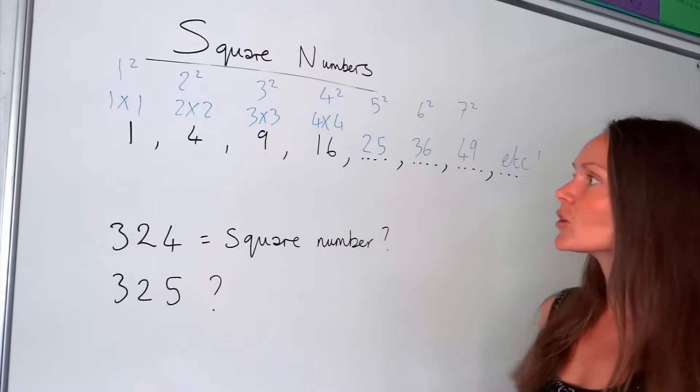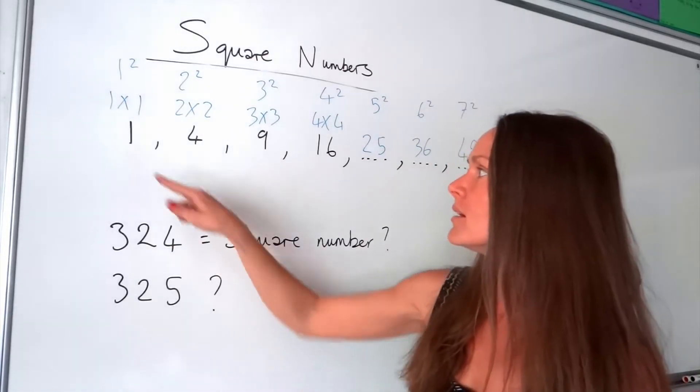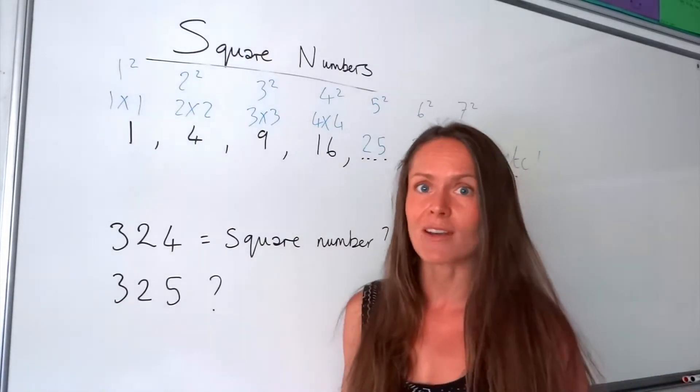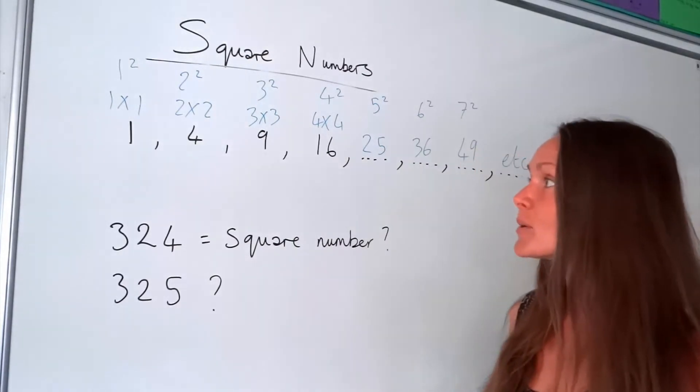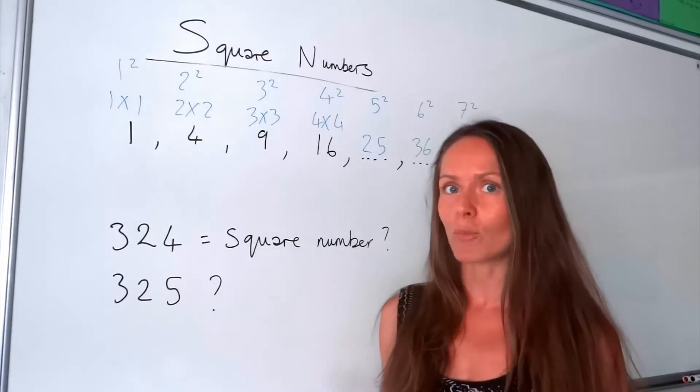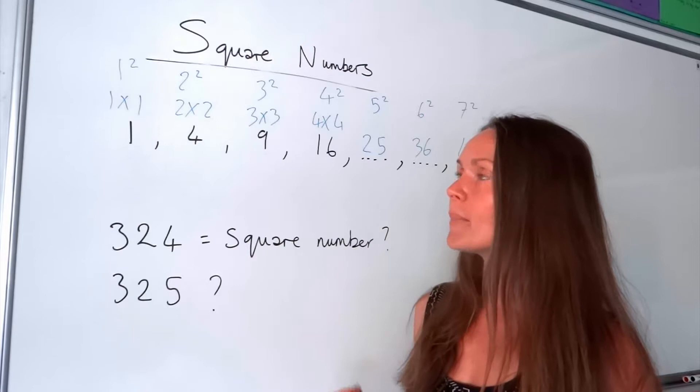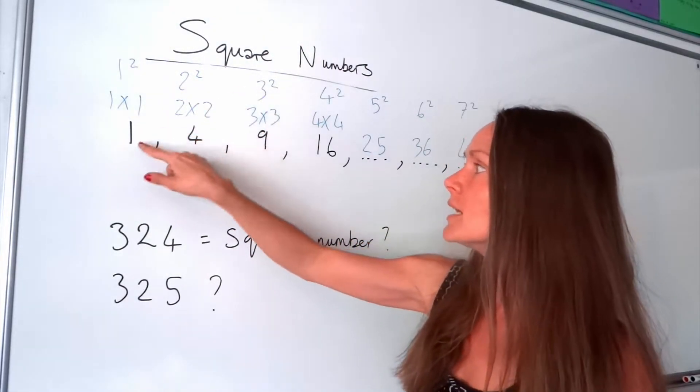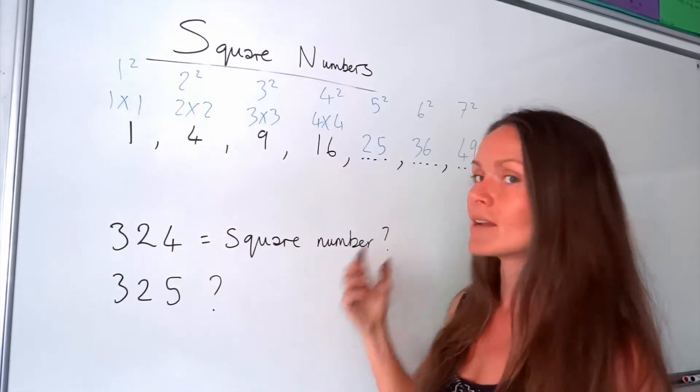So it's a good idea to try and remember these first few square numbers. I would say up to at least the tenth square number, which is 100, because they come up very often in maths. And if you can't remember them off by heart, don't worry, just remember how to calculate them. Remember, you have to square these numbers in order to calculate those square numbers below.